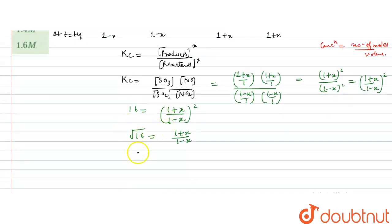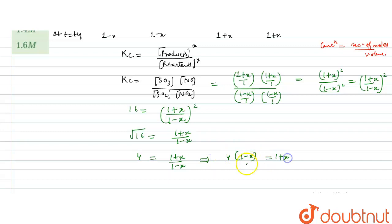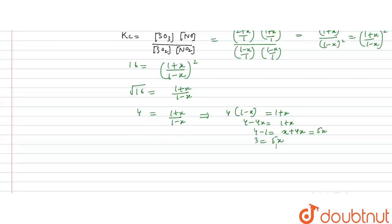√16 is 4, so 4 = (1 + x)/(1 − x), which gives us 4(1 − x) = 1 + x, that is 4 − 4x = 1 + x. Solving this, x = 3/5.